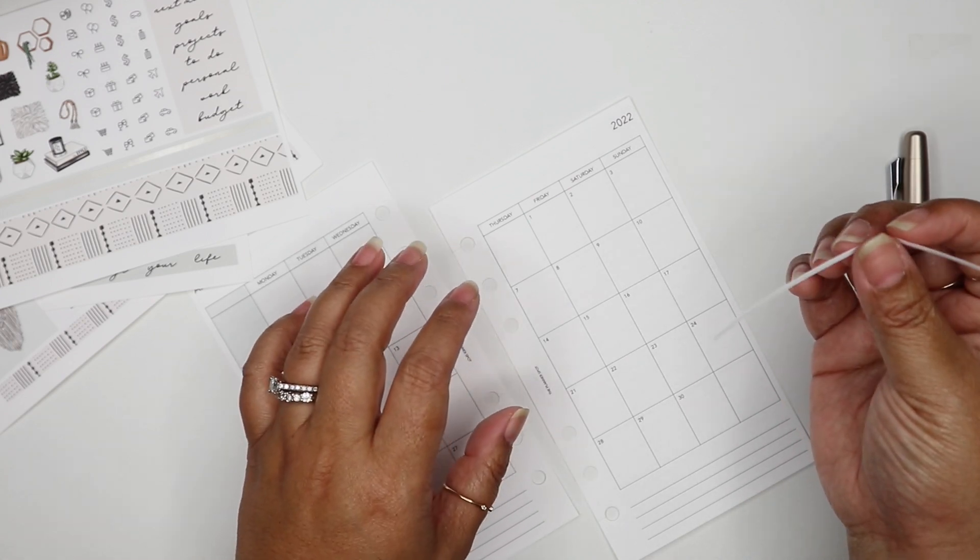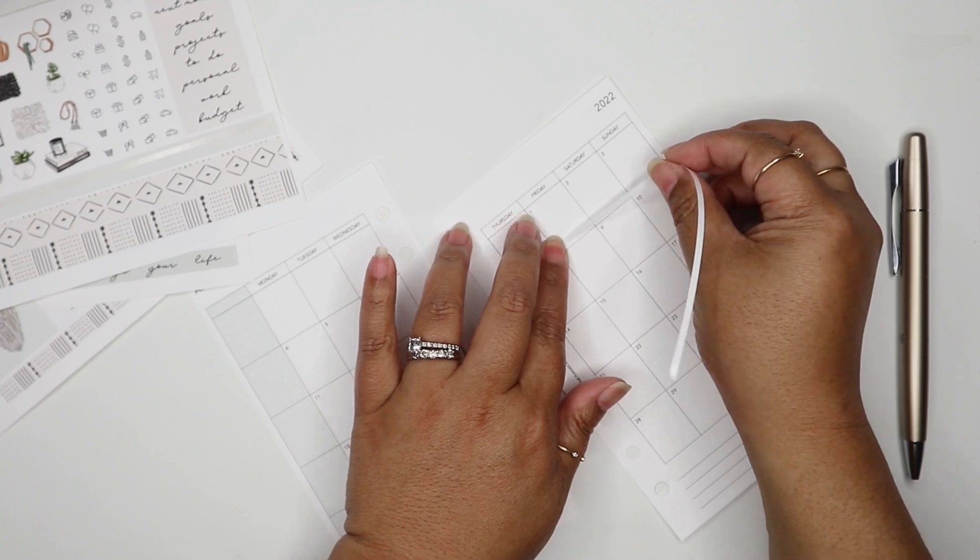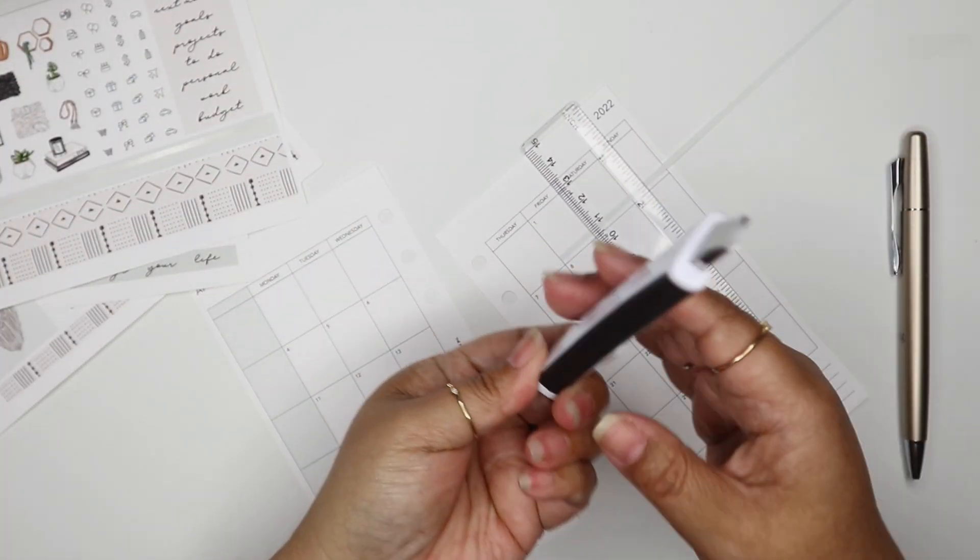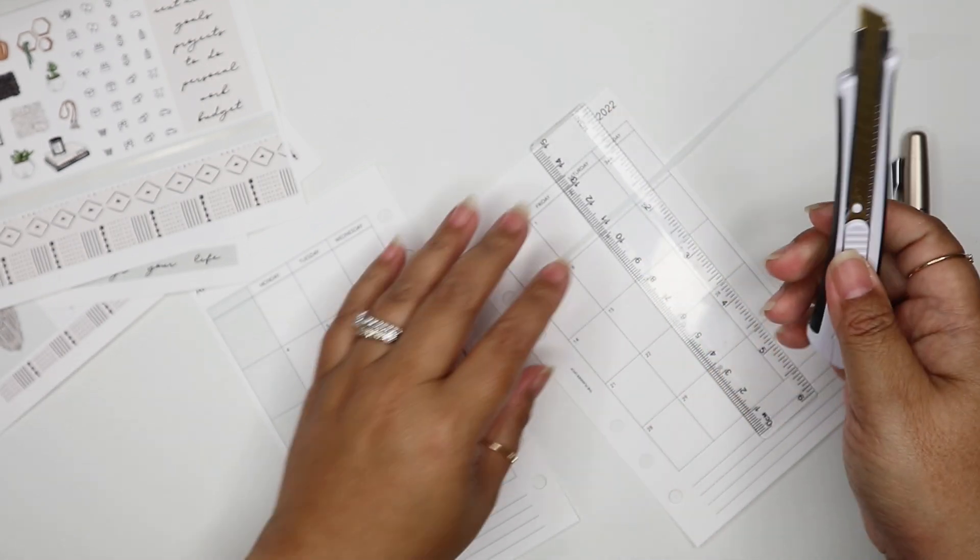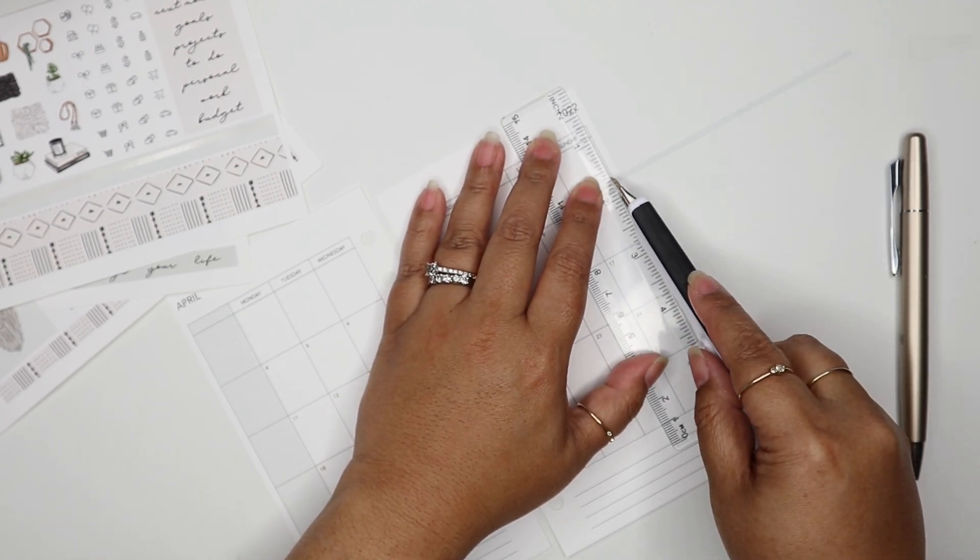I want to mark April 1st to April 3rd and then cut it with my crazy looking cutter. It works really well and it's the best one I could find.